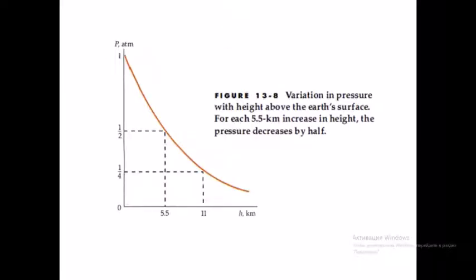In this picture you can see the variation in pressure with height above the Earth's surface. For each 5.5 km increase in height, the pressure decreases by half. At zero altitude the pressure is 1 atm; at 5.5 km it is 1/2 atm; at 11 km it is 1/4 atm. This relationship can be described by the barometric formula.